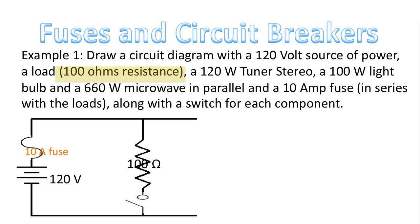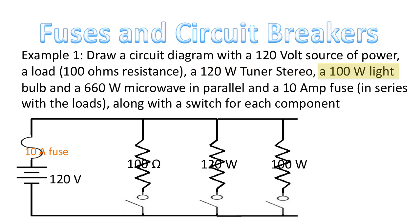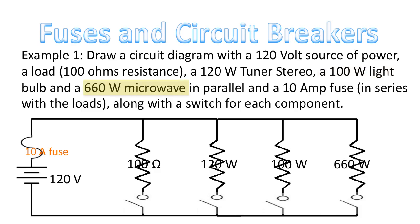Next, we're going to add our 100-ohm resistance, along with the switch — the switch is currently open. Next, we add our 120-watt tuner stereo; again, the switch is open right now. We'll add our 100-watt light bulb, and finally our 660-watt microwave. Notice we're using the exact same circuit symbol to represent the loads — we're using the symbol associated with the resistor. And notice the switches for all four loads are open. So the question is: how much current would flow if all those switches were closed — if all these devices were turned on at the same time?